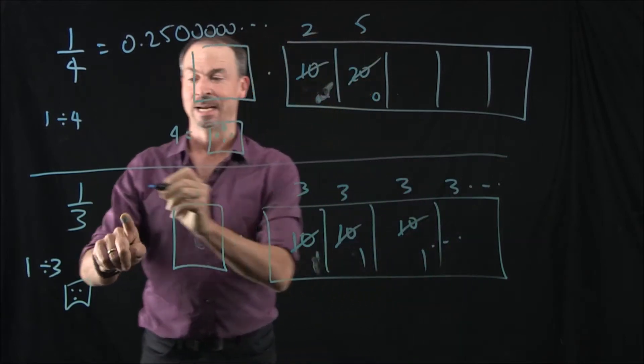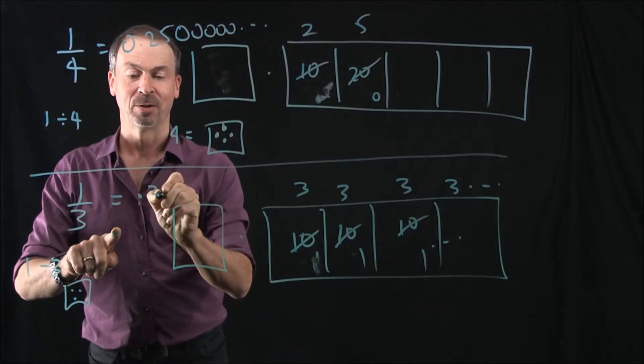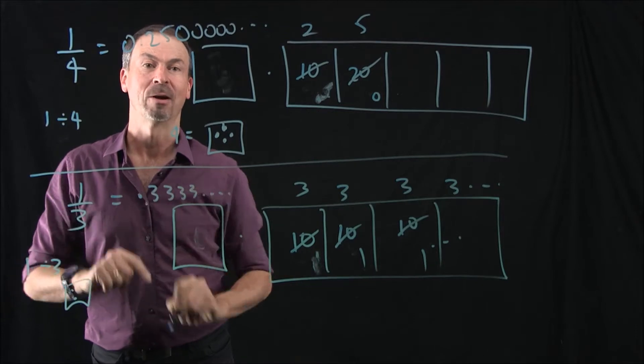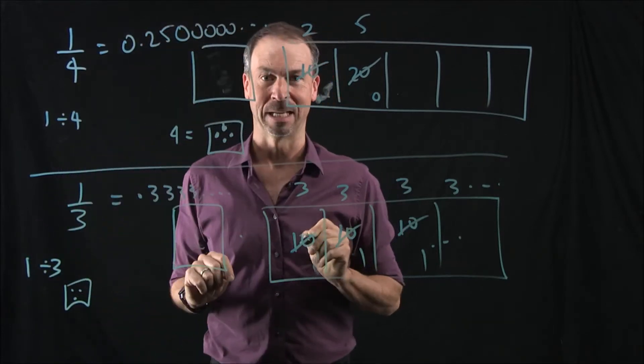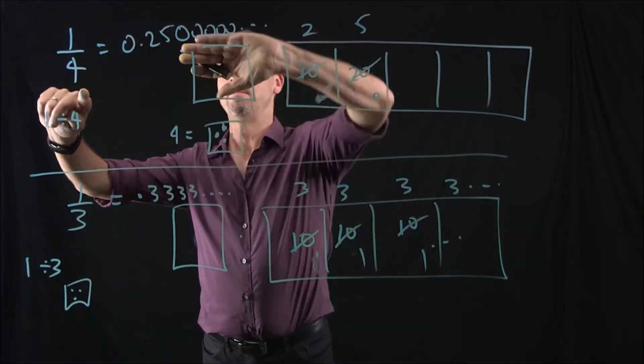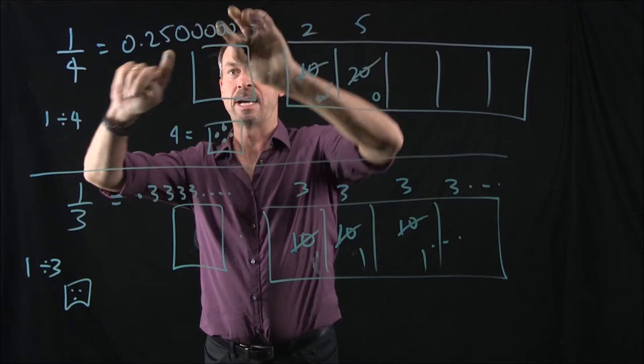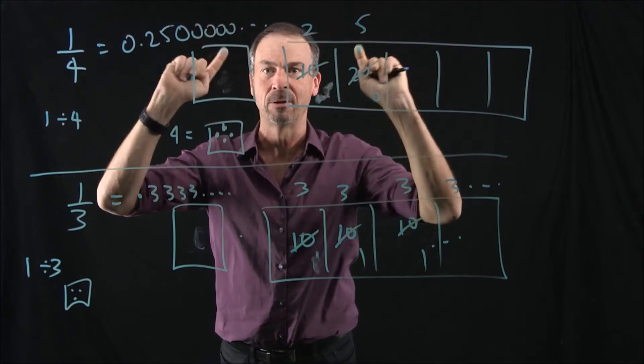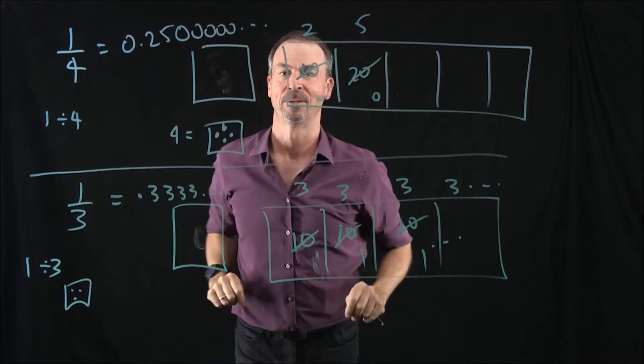So I'm now going to say that 1 third is 0.3333 forever. Again, another repeating decimal pattern. So 1 quarter, people will say is a finite decimal, or if you want to say it is actually a repeating pattern, a bunch of repeating zeros eventually. 1 third is also a repeating pattern.